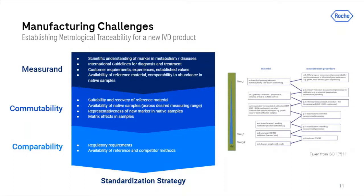At the beginning of an IVD development, one has to obtain a broad scientific understanding of the measurand to be detected — for example, the role it plays in the human body, its synthesis or uptake and metabolism, and its abundance in various associated diseases. One also has to understand the history of the measurand: are there already international guidelines or customer expectations for expected values? Is there a reference material or reference method available? This should set the starting point for standardization — the definition of the measurand and potential reference materials or methods.